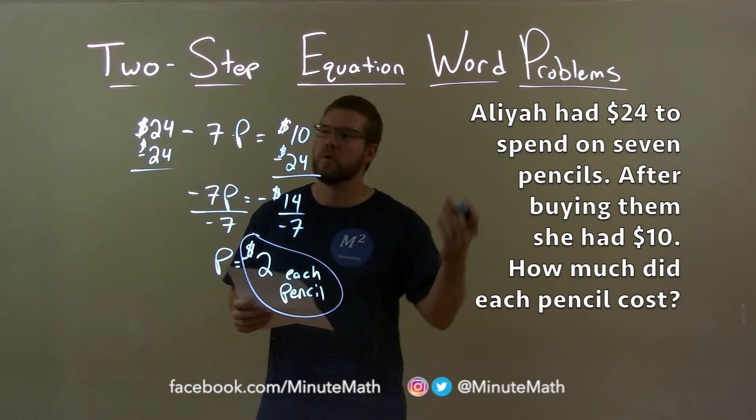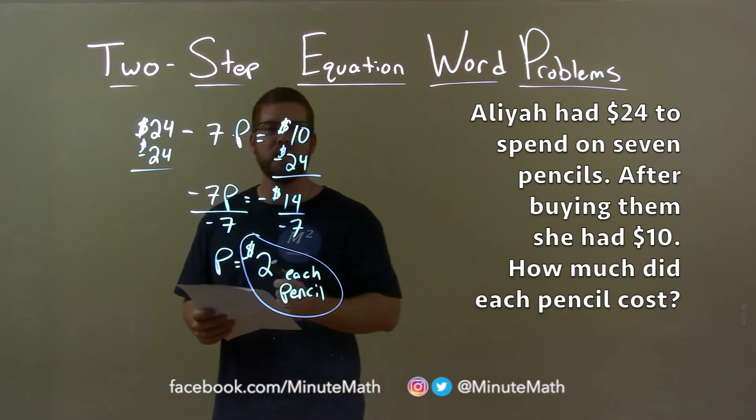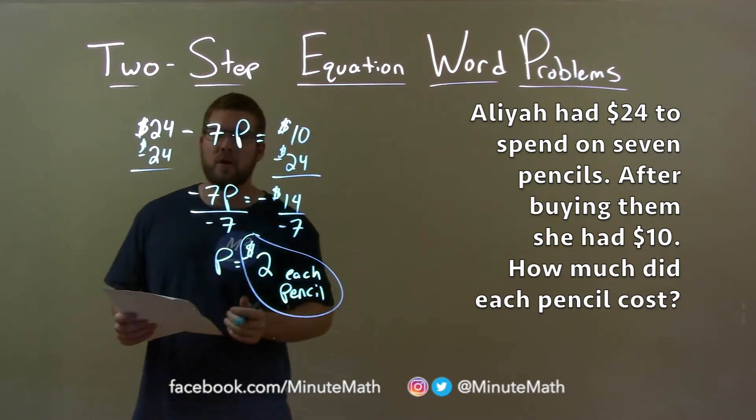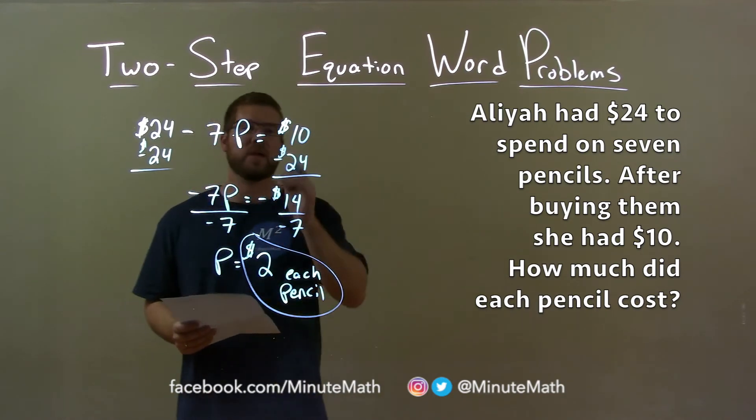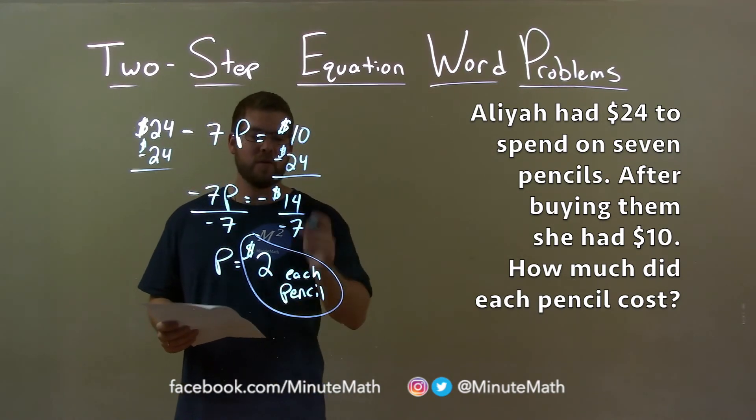With that information, we created this equation: $24 minus 7P equals $10, and then we solved for P. Subtract $24 from both sides, divide both sides by negative 7, and got our final answer of $2 for each pencil.